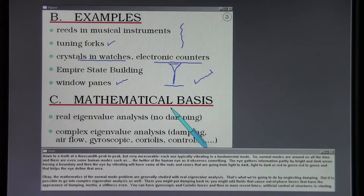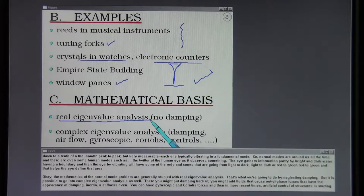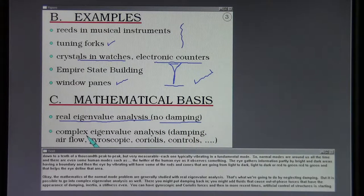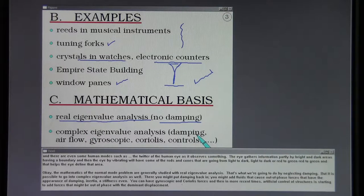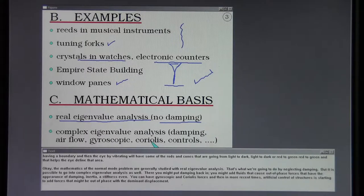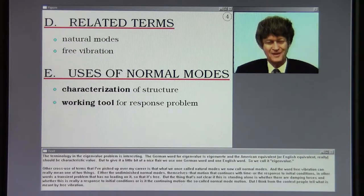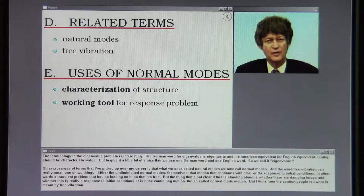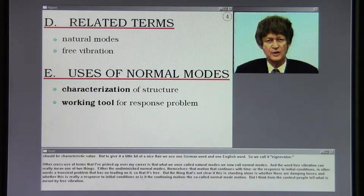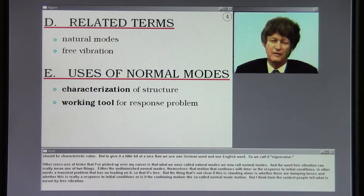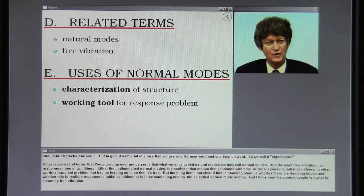The mathematics of the normal mode problem are generally studied with real eigenvalue analysis by neglecting damping. But it is possible to go into complex eigenvalue analysis as well, where you might put damping back in, add fluids that cause out of phase forces, inertia, stiffness, gyroscopic and Coriolis forces, and artificial control of structures. The terminology in the eigenvalue problem is interesting. The German word for eigenvalue is eigenwerte, and the American equivalent really should be characteristic value. But to give it a nice flair, we use one German word and one English word, so we call it eigenvalue.